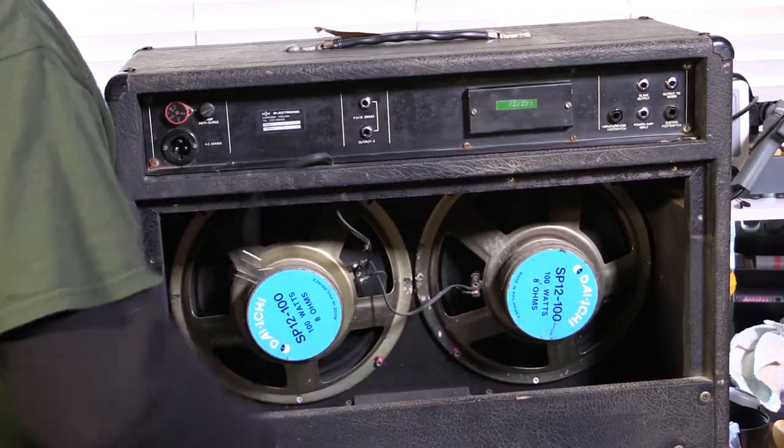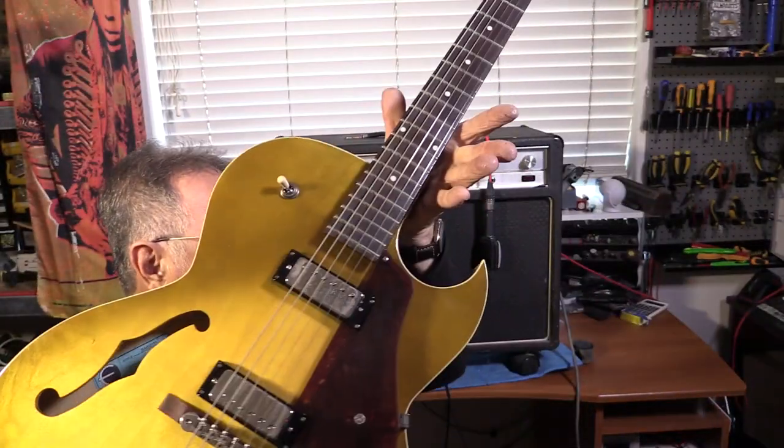Yeah, that's better. One Epiphone Sorento into one HH IC 100. Hmm, I was listening to a bit of Miles Davis this morning. I think I'll try and do a botched up version of So What. Here we go.